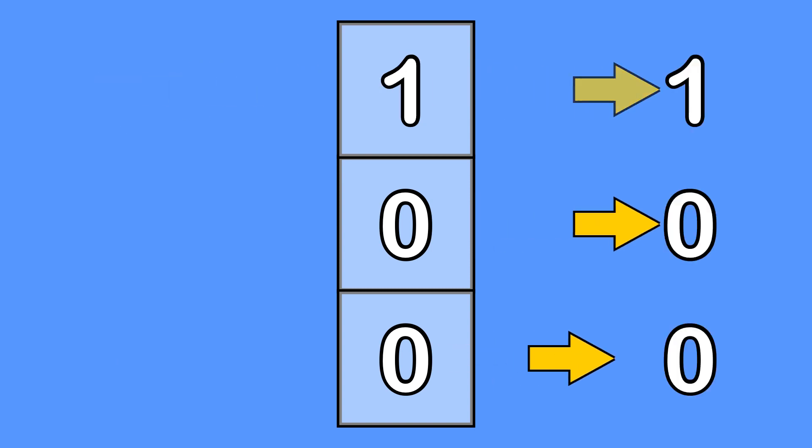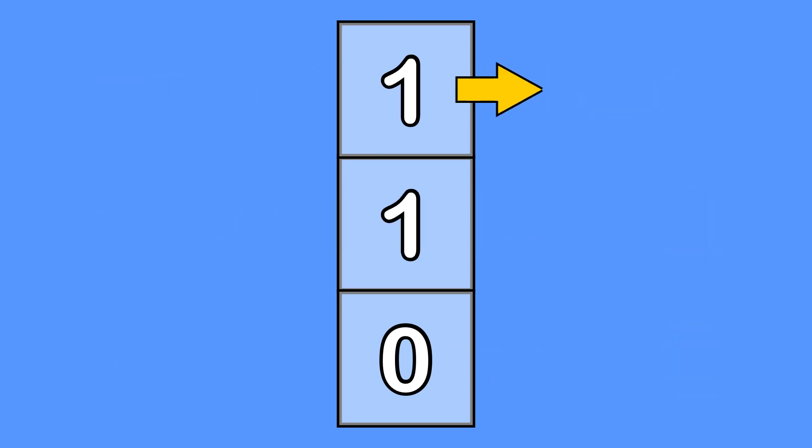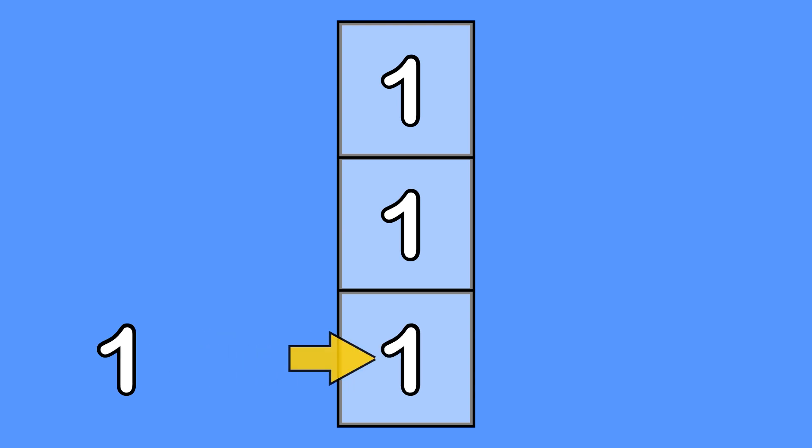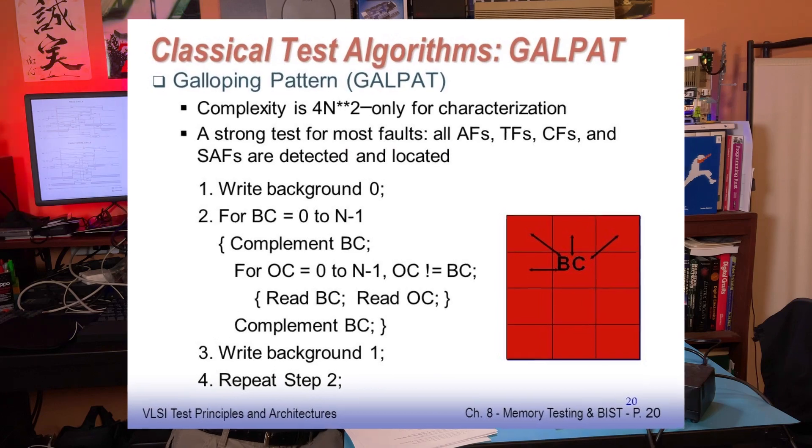The most complete way to test for these faults is to flip just one bit at a time and then read back every other bit to make sure none of them changed. This is called Galpat, short for Galloping Pattern. But because every bit is tested against every other bit, the algorithm has n-squared complexity, meaning the time taken scales by the square of the size of the DRAM. For a tiny 64 kilobit RAM this would take a couple of hours, but modern DRAM in the gigabits would take thousands of years — obviously way too slow.